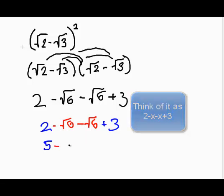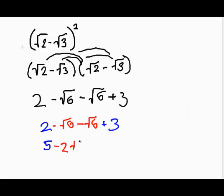Adding a little more color to that, we're going to box it in green. Five minus two radical six is our final answer.